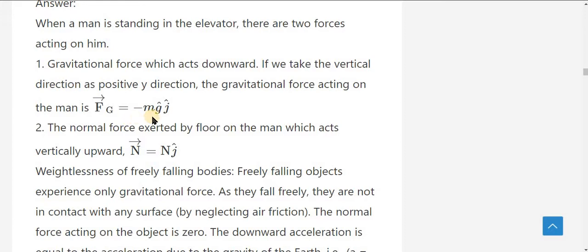Fg vector is equal to minus mg j cap. Why we put this minus sign? Because the lift is moving in an upward positive y direction, but the gravitational force is acting in a downward direction. So, opposite direction. Gravity acting in the opposite direction of movement of lift. That is why we put this minus sign. Fg vector is equal to minus mg into j cap.